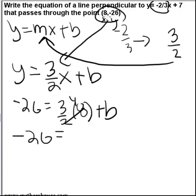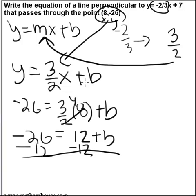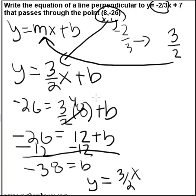This becomes 4 so you've got 12 plus b. And just subtract 12 from both sides to get b. b is negative 38. Just write the equation now. That should be minus 38.